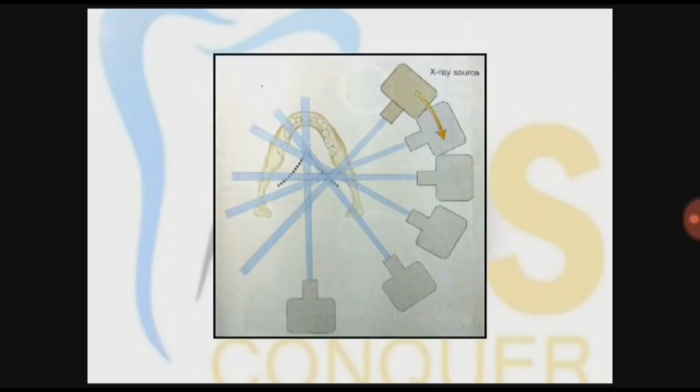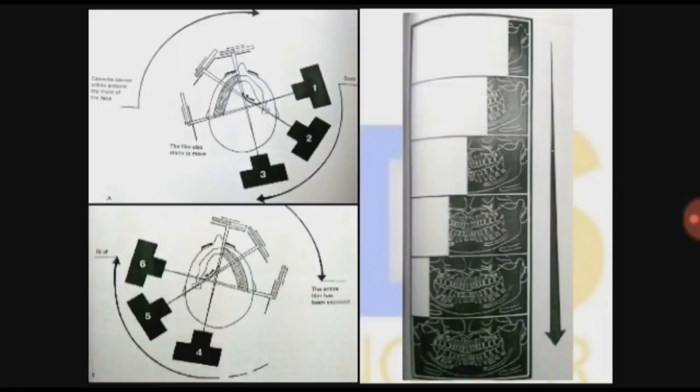You can see that the tube is never going to the most anterior part. The most anterior or midline anterior part is not covered by the tube. At the same time, the receptor never goes to the most posterior part. It has a significance we'll see further.